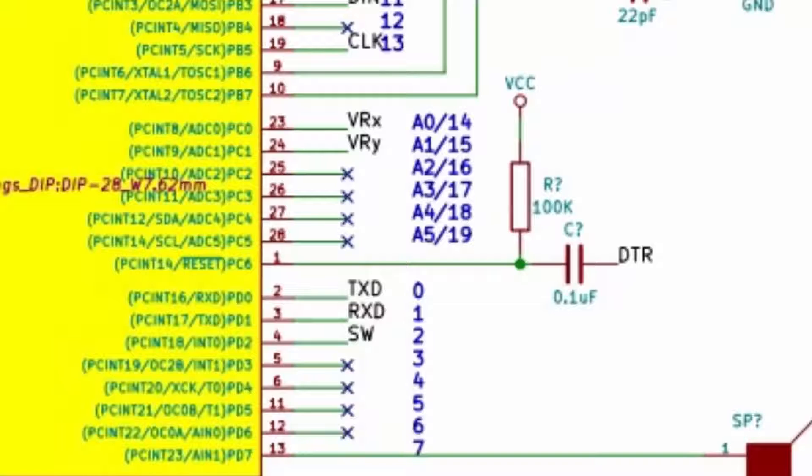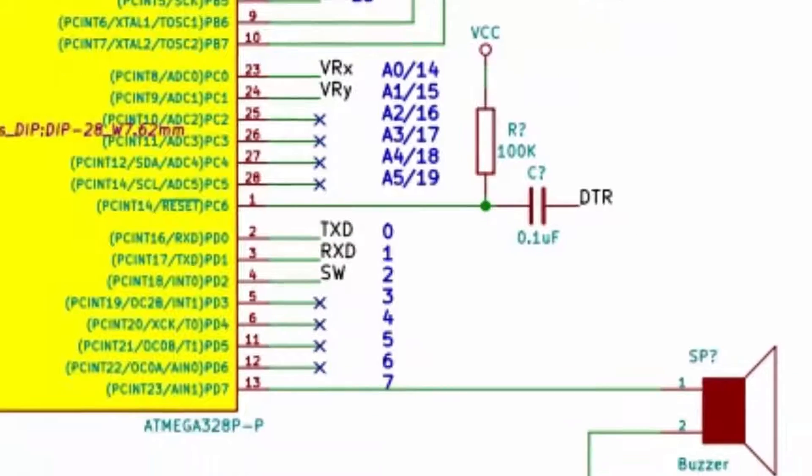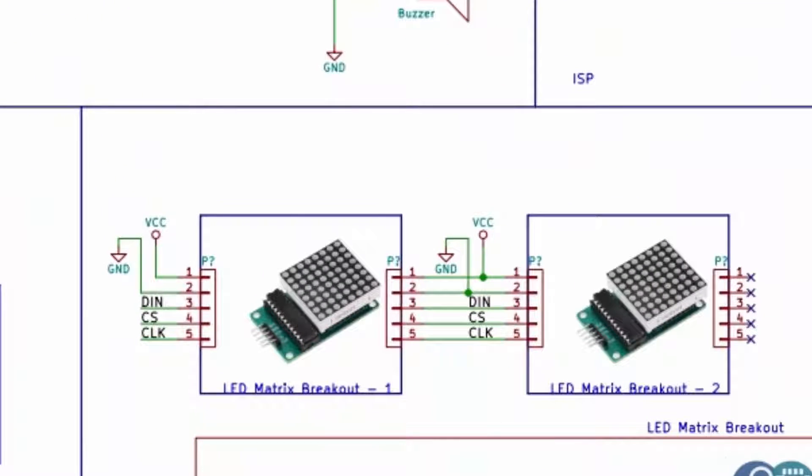We will be using two bright red matrix displays with MAX7219 drivers. The driver chip allows cascading of several displays. It just needs 3 pins apart from power. The output of the first display is connected to the input of the next one.